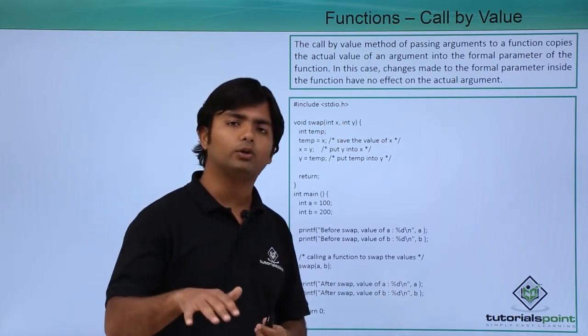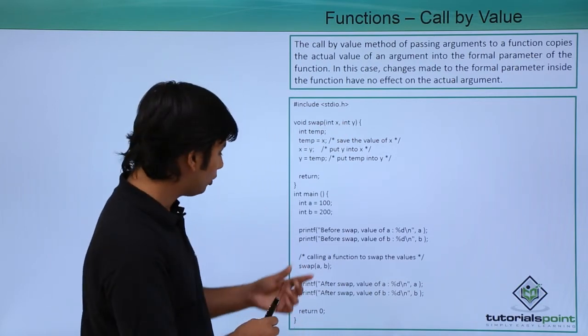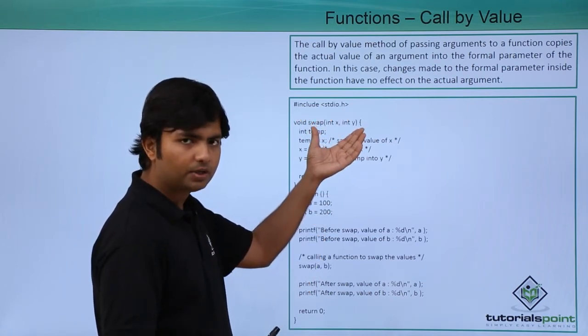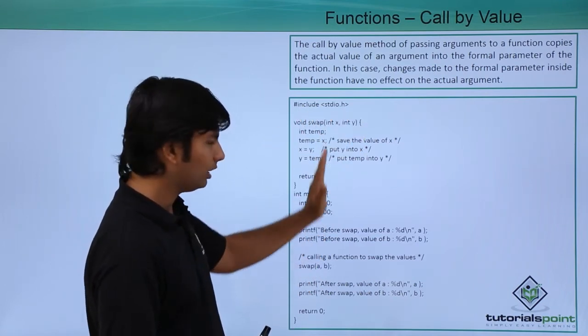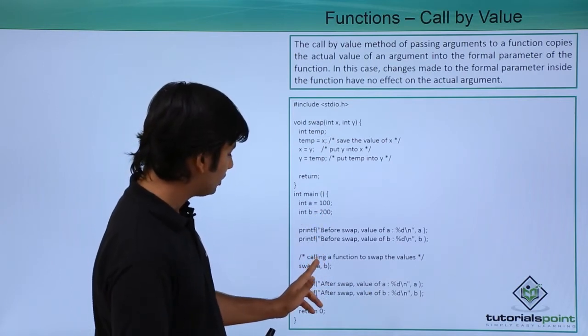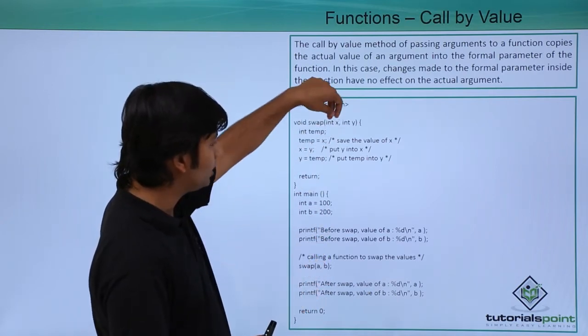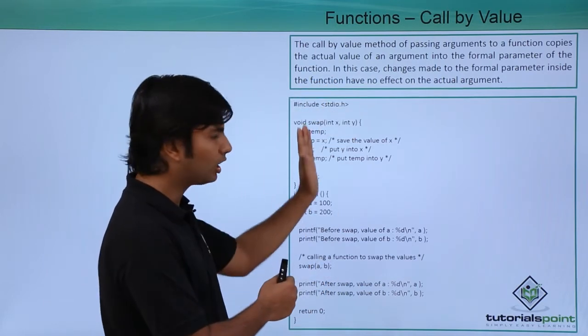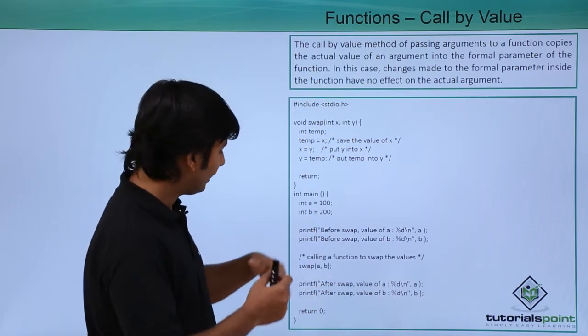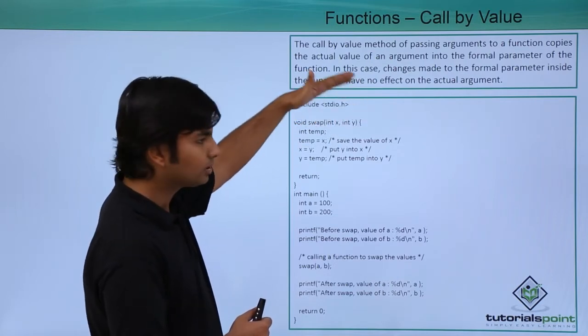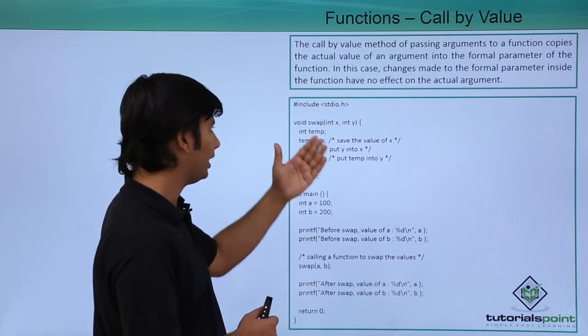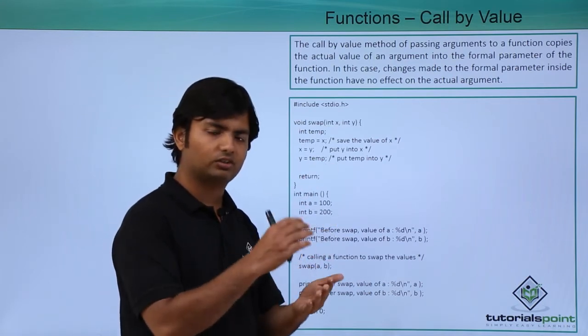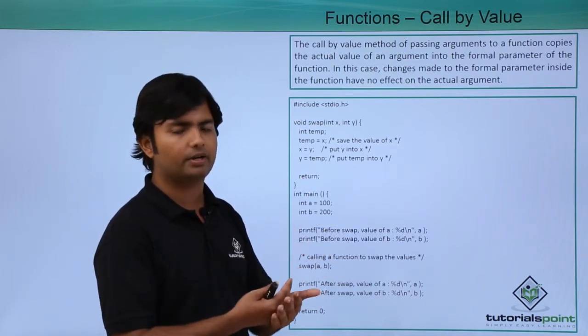When I say call by value, it means the value of these will be copied in the formal parameters. So if I follow the sequence as well, the value of a will be copied to x, value of b will be copied to y as per the first argument and second argument. And as soon as values are passed, this process will be done and the things whatever we are doing here, we are swapping the values. That is, a will be getting a value of b, b will be getting value of a.